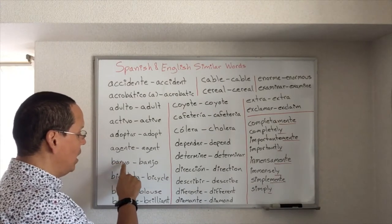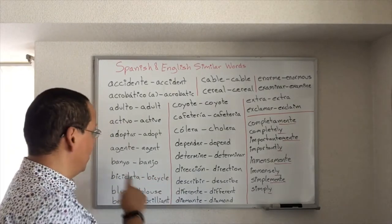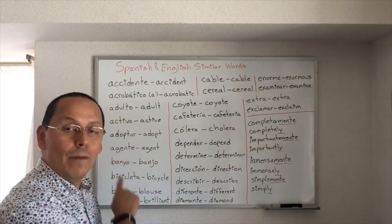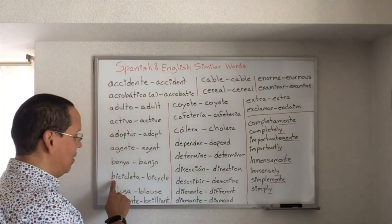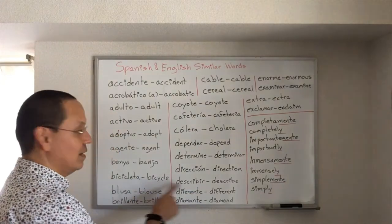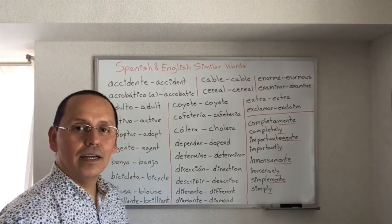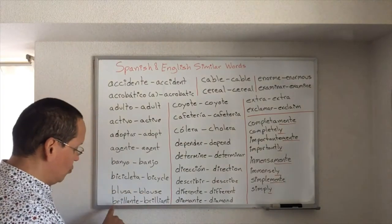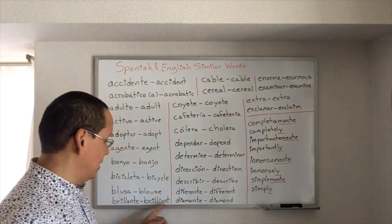Banjo — banjo. Very similar, huh? Bicicleta — bicycle. Blusa — blouse. Brillante — brilliant.